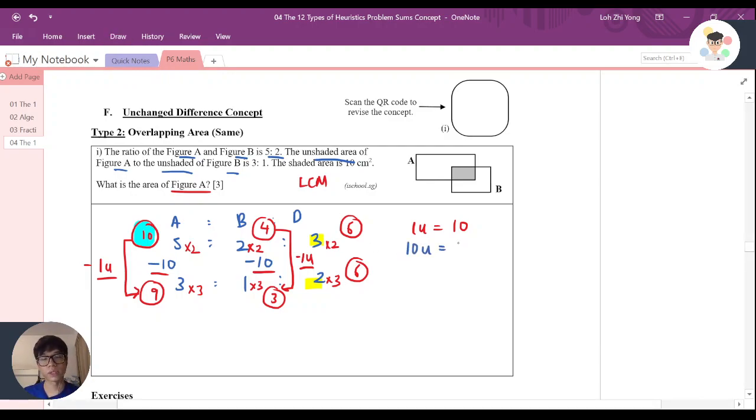So 10 units will be equal to 10 times 10, and that is equal to 100 cm².